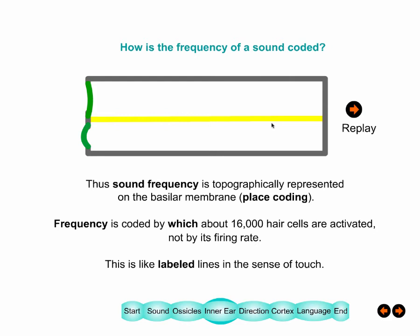It's like the labeled line of touch — which afferent is being activated. But instead of just four types of labeled lines, here we have something like 16,000 hair cells, giving you the opportunity to detect about 16,000 different frequencies.